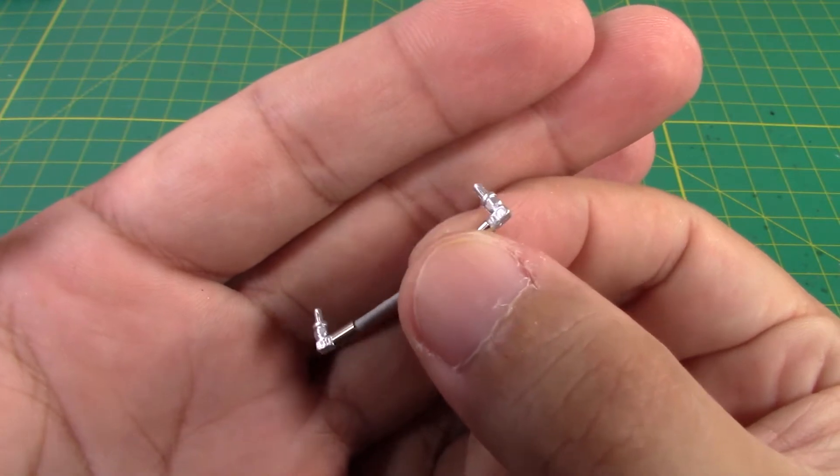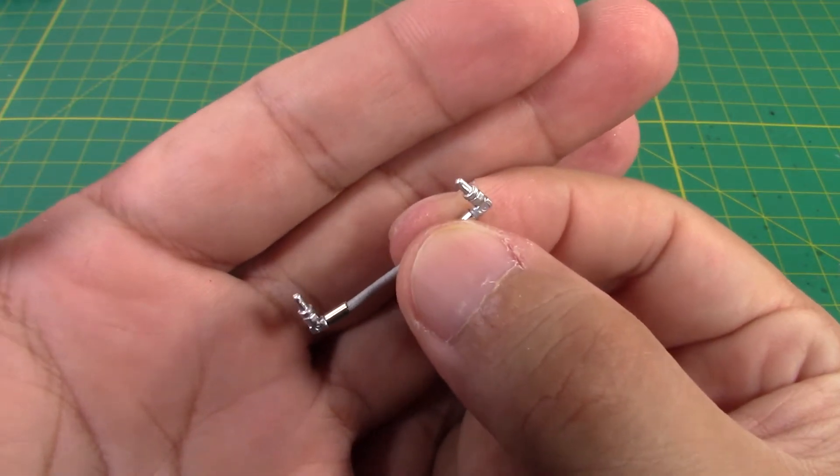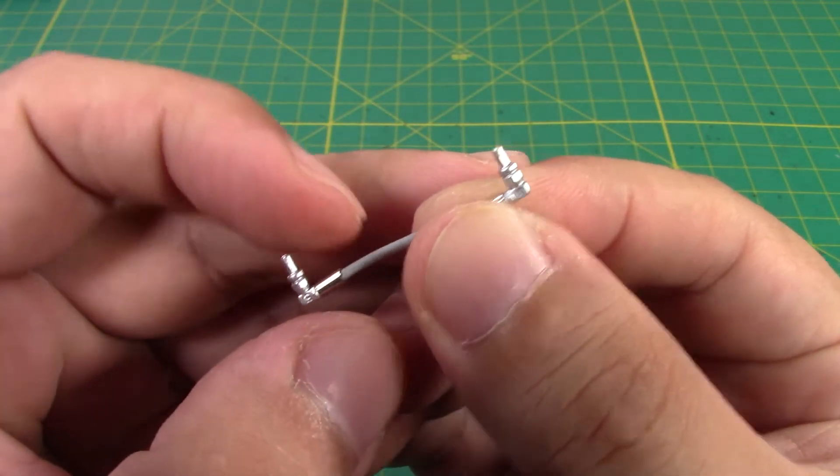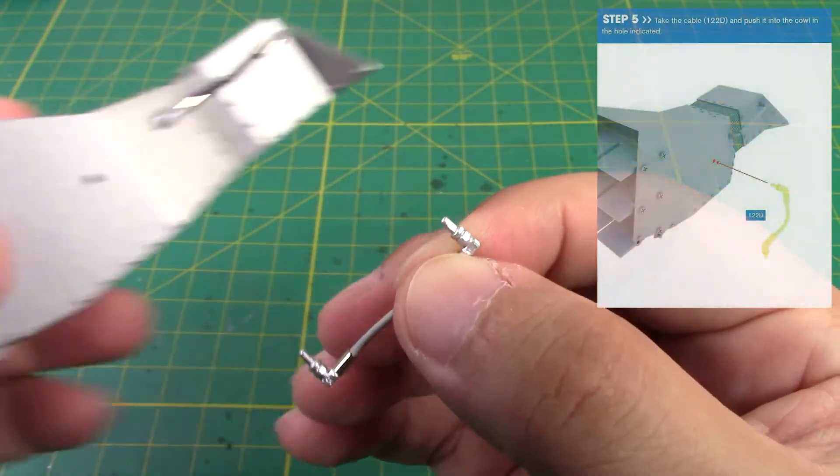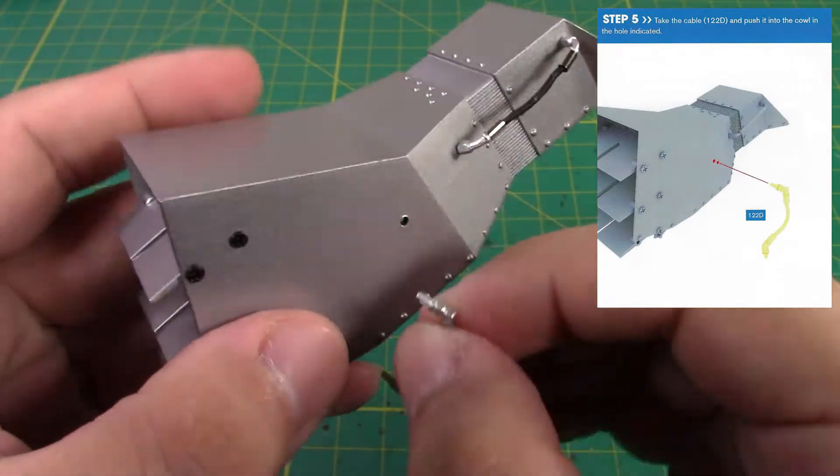And next we're going to take our cable section number 122D. Both ends do look the same so I don't think it matters which side goes where, but we're going to put one right into this hole here.